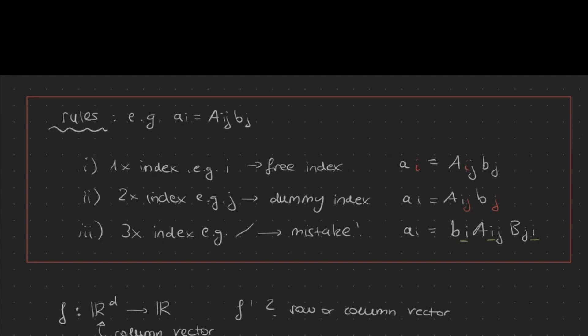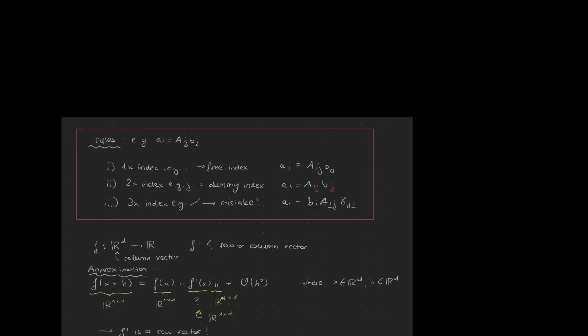The second rule is: whenever an index appears twice, like j does here, it is called a dummy index, which implies that we sum over it. The third rule is: whenever an index appears more than twice, like i does in this wrong example, it is called a mistake.